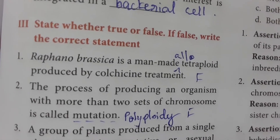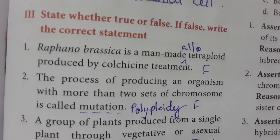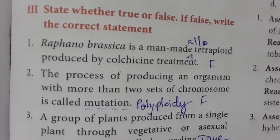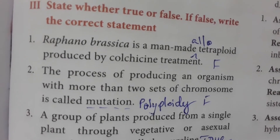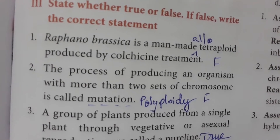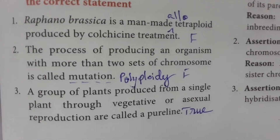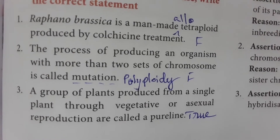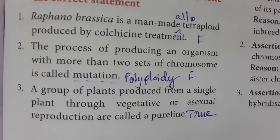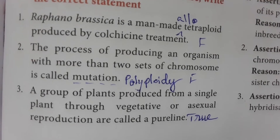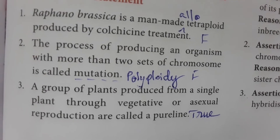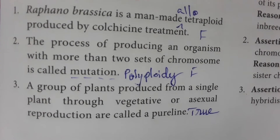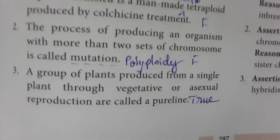True or False: Raphanobrassica is a man-made tetraploid produced by colchicine treatment — this is false. Raphanobrassica is a man-made allotetraploid produced by colchicine treatment. The process of producing an organism with more than two sets of chromosomes is called mutation — this is false. The correct term is polyploidy.